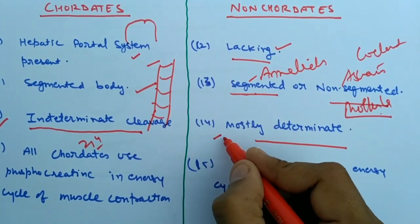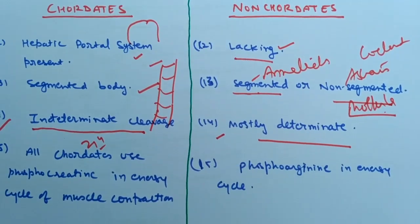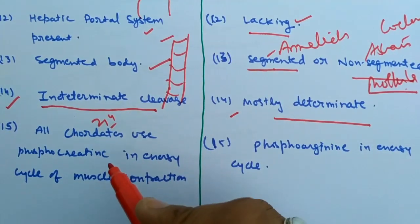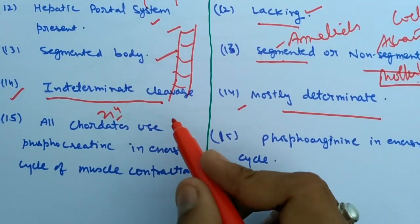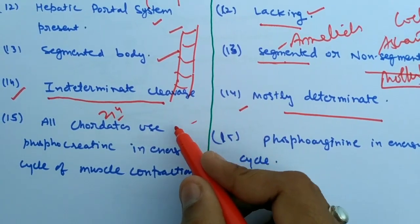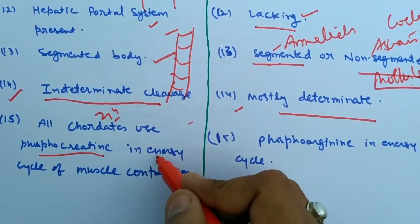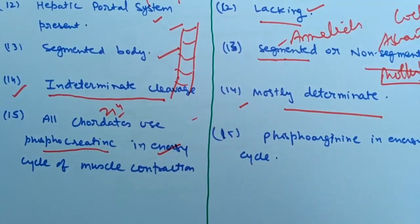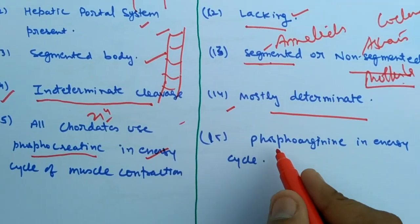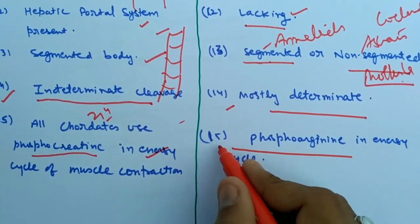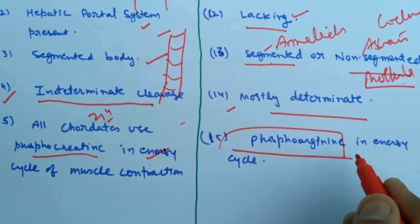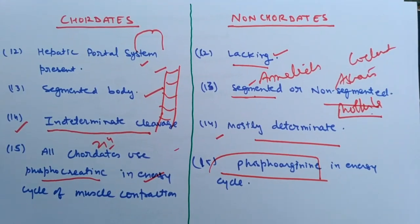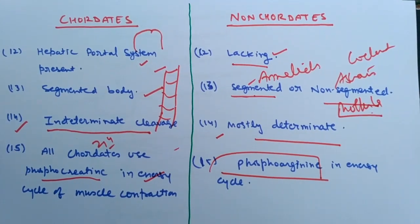The last difference is that all chordates use phosphocreatinine as an energy source for muscle contraction, while in non-chordates there is phosphoarginine as the energy source. I hope this is helpful to you.